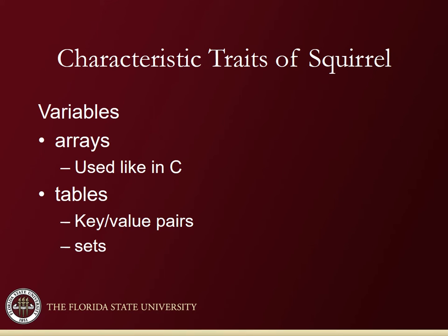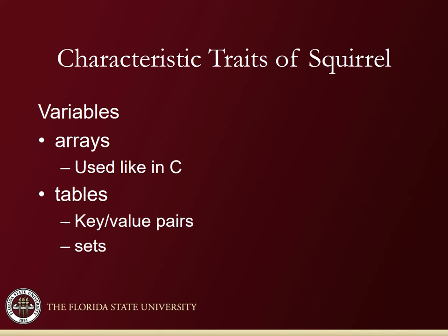Arrays are declared and used much like they are in C and C++. Tables are set up so you can use a key-value pair, similar to sets, associative arrays, or hash tables. Blobs are user-defined blocks of data — they can be set up however you want, have read-write pointers, and can be accessed like a file.